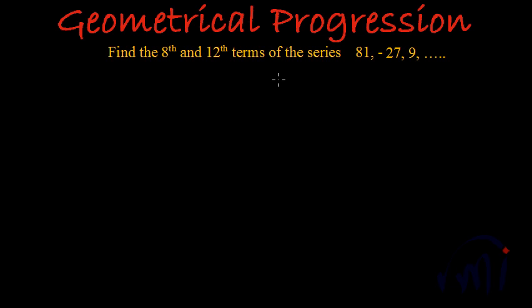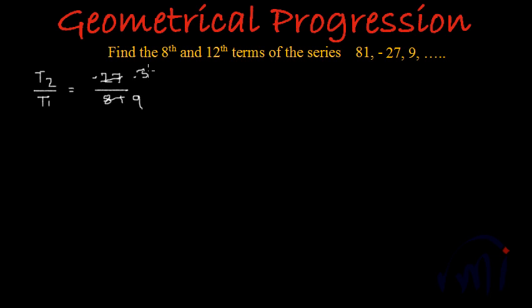Let's first check whether it is a geometrical progression or not. If it is a geometrical progression, the ratio of two consecutive terms will be the same or constant. So let me first do T2 divided by T1. It will be minus 27 divided by 81. 9 threes are 27 and 9 nines are 81. It can be solved further: 3 ones are 3 and 3 threes are 9, and this will be negative. So T2 divided by T1 we are getting as minus 1 by 3.